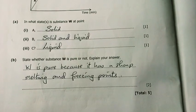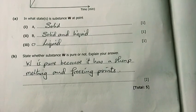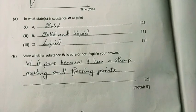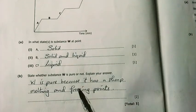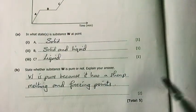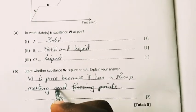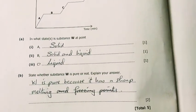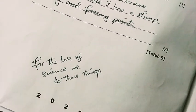Number B, state whether substance W is pure or not. Explain your answer. My explanation is that W is pure because it has a sharp melting point. It has a sharp melting point. For the love of science, we do these things.